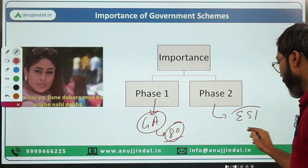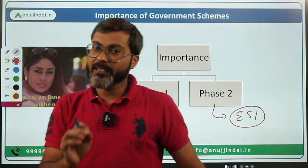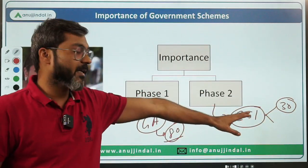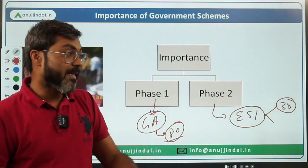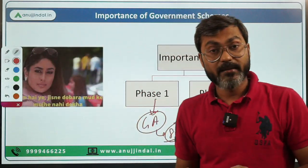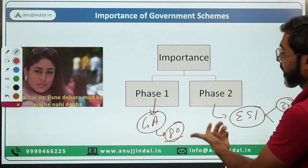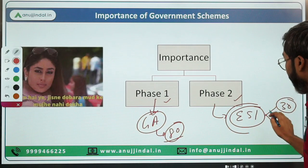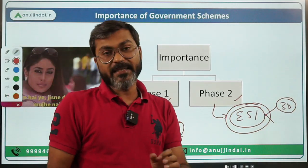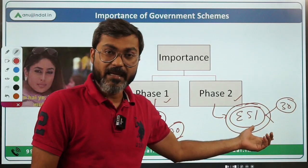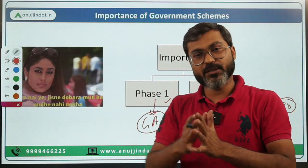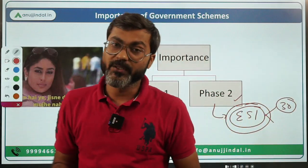In Phase 2, we have Economic and Social Issues. There are 30 questions in the objective paper, and around 12 to 15 questions are from government schemes only — and these questions are not easy at all. In the 2022 examination, people who were well-versed with government schemes scored very good marks in ESI, because the paper was difficult just because of government schemes.